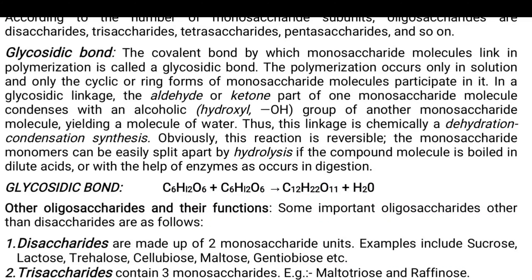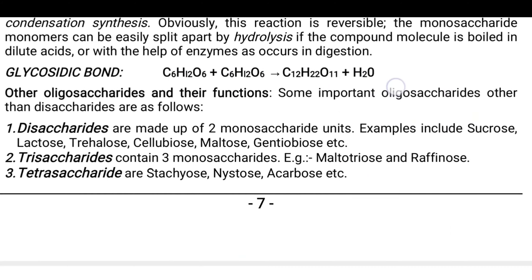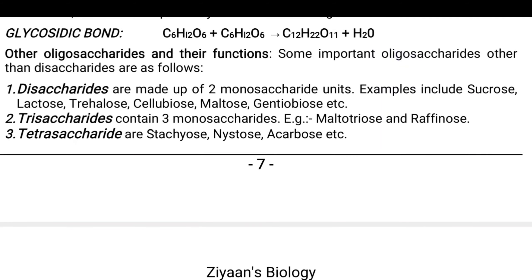Now, other oligosaccharides and their functions. The first one we have already dealt with is the disaccharide, made up of two monosaccharide units. Examples are sucrose (glucose + fructose), lactose (glucose + galactose), and also trehalose, cellobiose, maltose and gentiobiose.